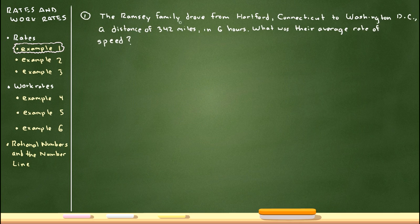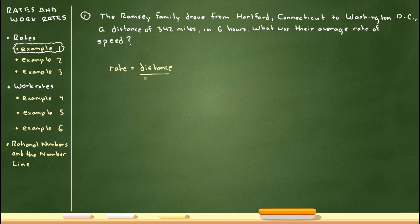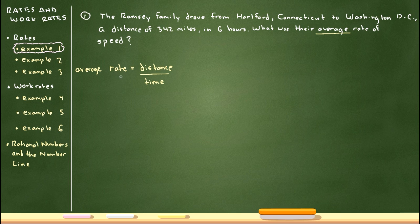Example one: the Ramsey family drove from Hartford, Connecticut to Washington DC, a distance of 342 miles, in six hours. What was their average rate of speed? The formula rate = distance over time gives an average rate — it's not measuring speed at a specific moment, just the average from one place to another. If you see the term 'average' in these word problems, this is the formula to use.